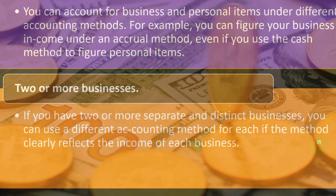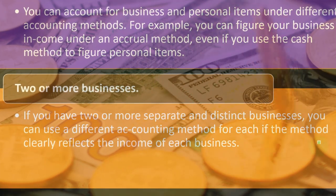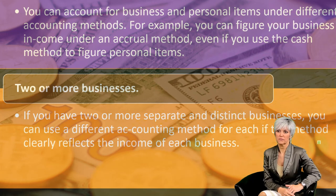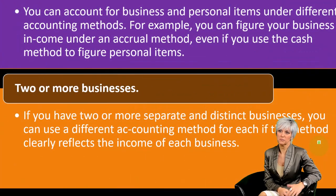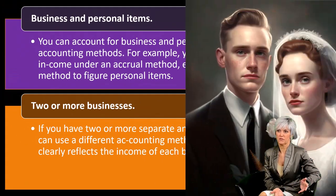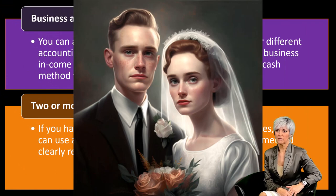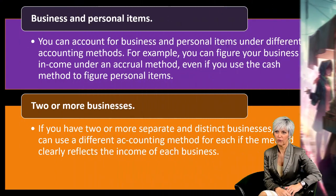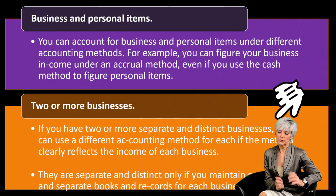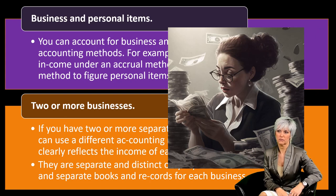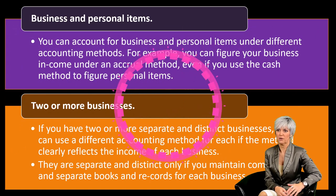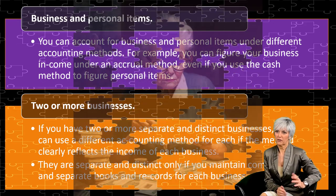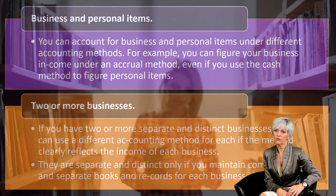If you have two or more separate and distinct businesses, you can use a different accounting method for each, if the method clearly reflects the income of each business. For example, a married couple or a sole proprietor with two distinct businesses might use an accrual method for one and a cash basis method for the other. You must keep the accounting separate: they are separate and distinct only if you maintain complete and separate books and records for each business.